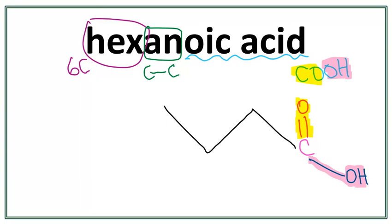1, 2, 3, 4, 5. Let's number these carbons. This is our first carbon here. This is the second carbon. Third carbon. Fourth carbon. Fifth carbon. And the sixth carbon.